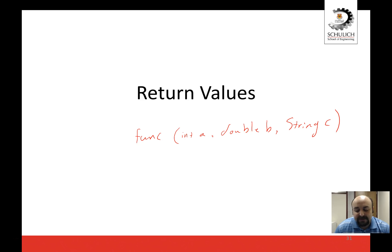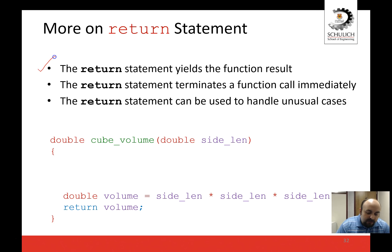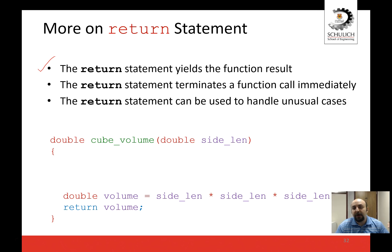A little bit more about return types. First, the return statement yields the function results — for example, in double cube_volume, you calculate the cube and return your result back to the calling function. Second, the return statement can terminate a function call immediately. That means if you hit a return in the middle of your function, the function terminates right away and doesn't execute the rest of the code.